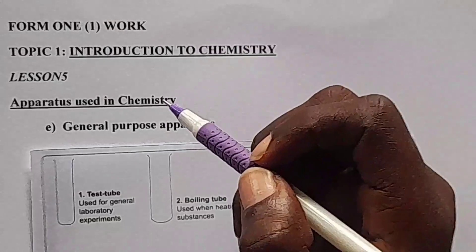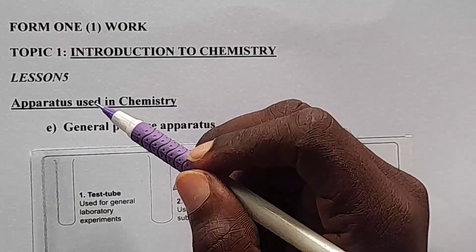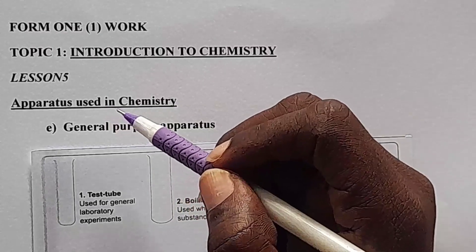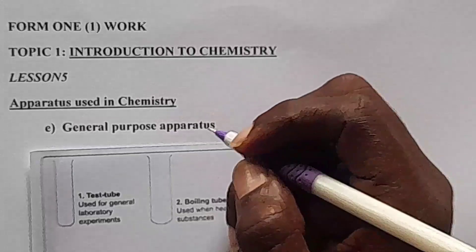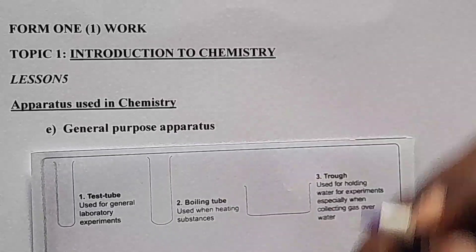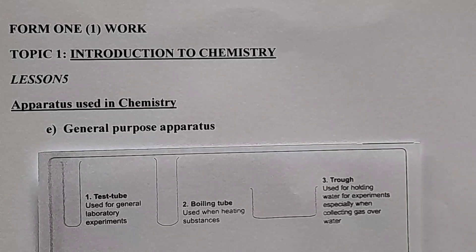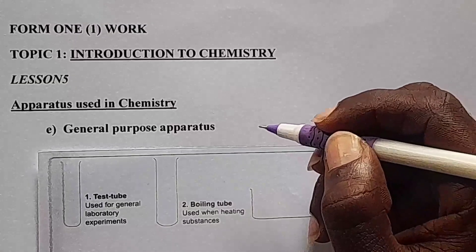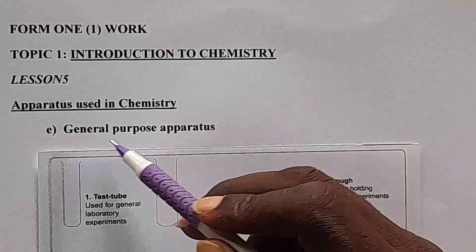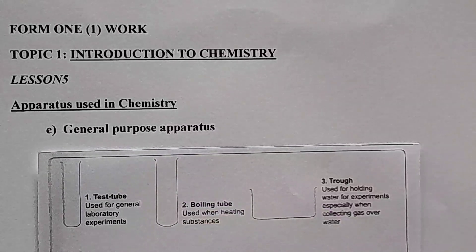Hello learners, welcome. In Form 1, previously, Lesson 4, we were dealing with apparatus used in chemistry, and we said we have apparatus used for measuring volume, apparatus used for measuring temperature, apparatus used for measuring mass, and apparatus used for measuring time. Then, in number E, we are dealing with general purpose apparatus, or the other apparatus that we use in the chemistry lab.